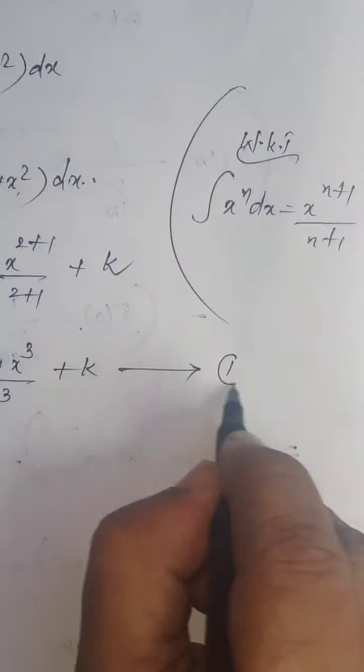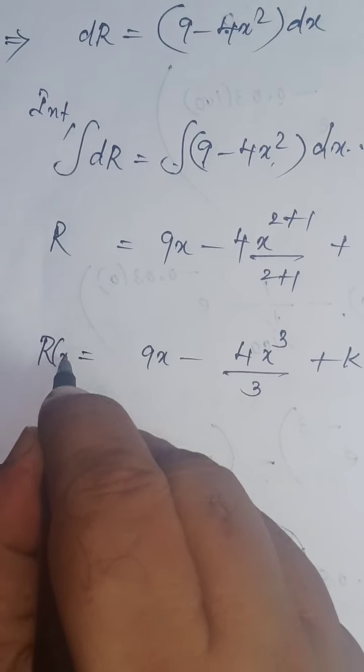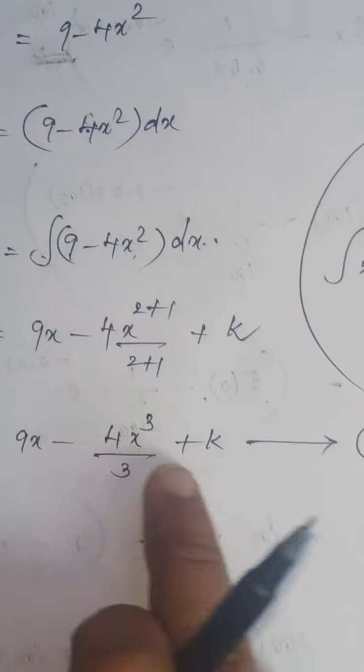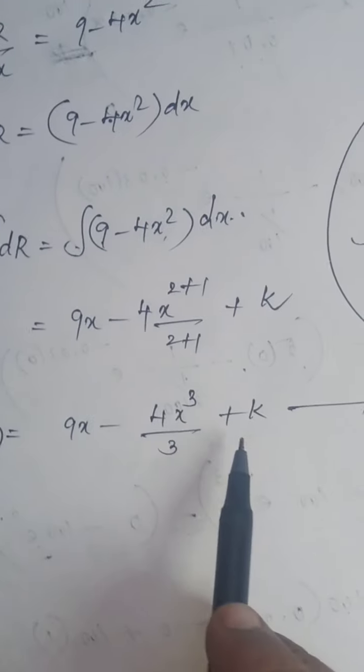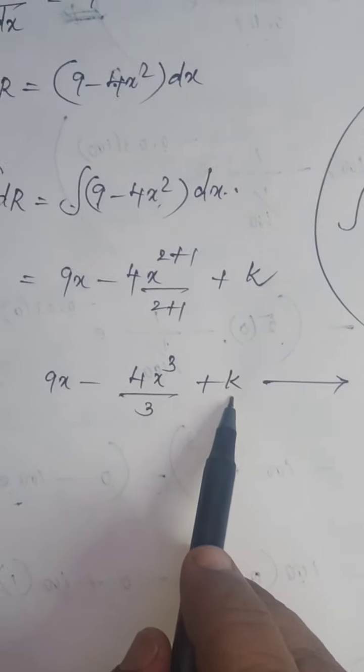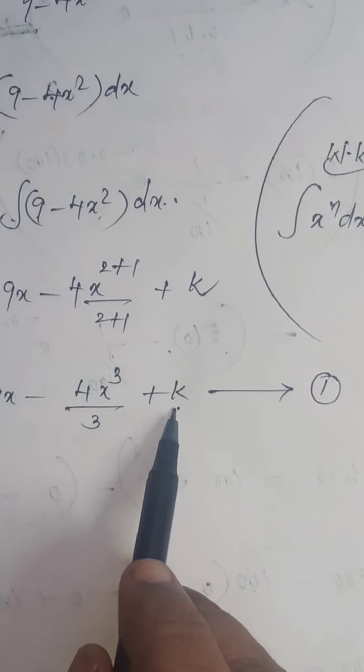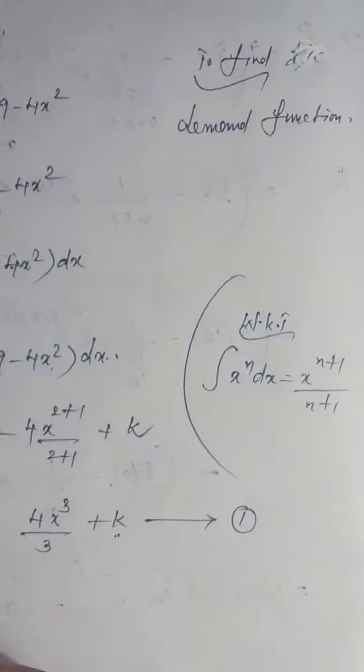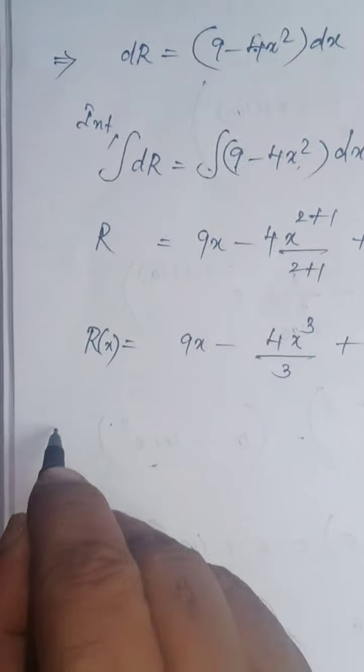Let it be equation 1. R and R(x) are the same, because R is revenue in terms of x. First you have to find the value of k. For finding k, no condition is given. In that case we have to consider x = 0, R(x) = 0.